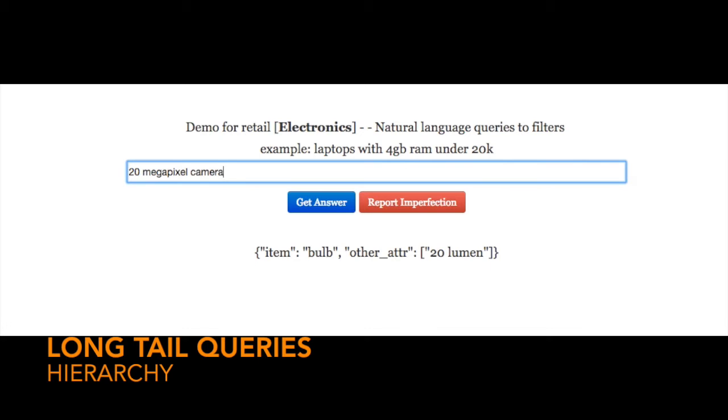Let's try a very generic long tail query which is 20 megapixel camera less than 25,000 rupees. It gave us a very neatly structured data which says that item is a camera, price range is 0 to 25,000, and attribute is 20 mpx.